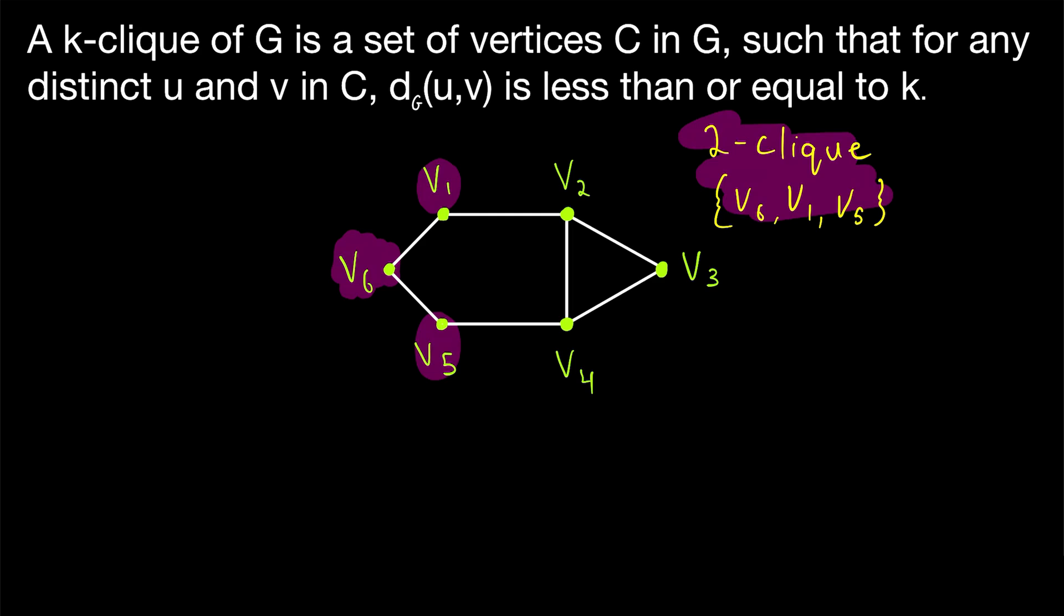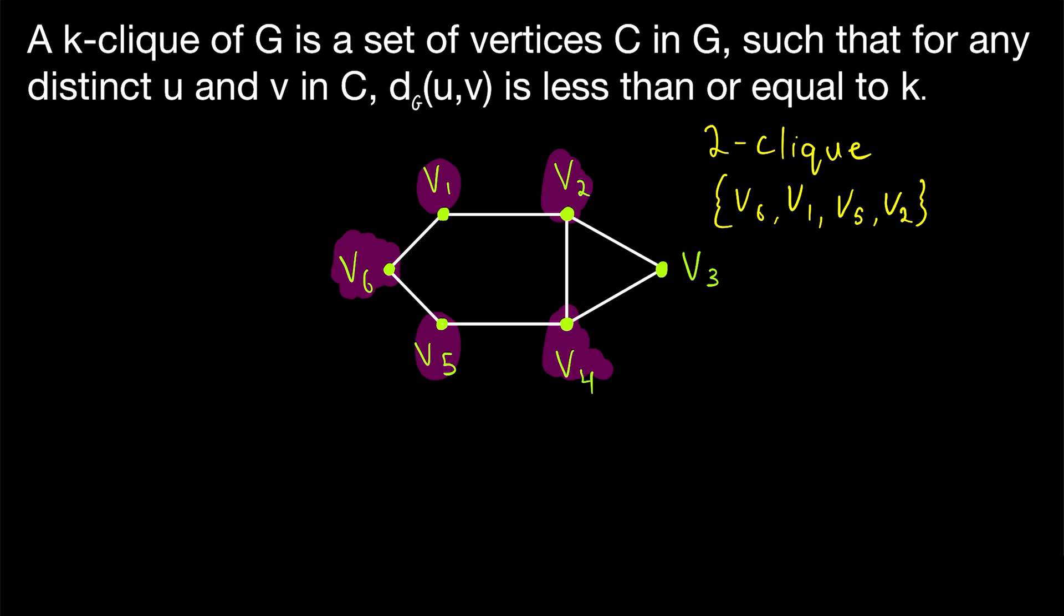Now, is this two-click we're looking at maximal? Or could we extend it by including some other vertex of the graph? Well, to see if we can add another vertex, we just have to see if there's another vertex in the graph that is within a distance of two from all three vertices already in our two-click. If we look at the vertex v2, it is a distance of one from v1, it's a distance of two from v6, and it's a distance of two from v5. So indeed, the distance between v2 and all three of these vertices is less than or equal to two. So we can include it in the two-click. And the same thing goes for the vertex v4.